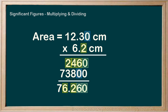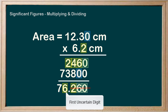We see that we have four uncertain digits in the answer, which doesn't work for us. We need only one uncertain digit. So, anything to the right of the 6 here has to be removed, leaving only one uncertain digit.